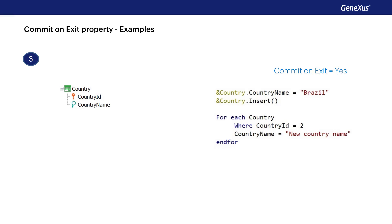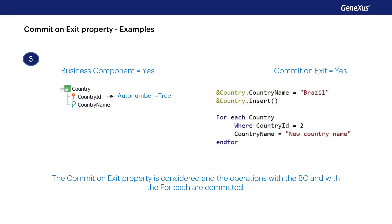In the third example, the same Country transaction has been set as a business component and the source of the procedure is as shown. The CountryID attribute is auto-numbered and the procedure has Commit on Exit set to yes. Since there are operations with the business component in the source of a procedure and there is also a foreach that performs updates on the database, the yes value of Commit on Exit is considered and both the operations with the business component and the operations of the foreach are committed. Therefore, the country will be inserted and the country with Country ID 2 will also change its name.